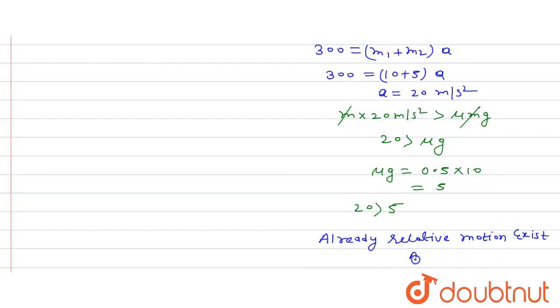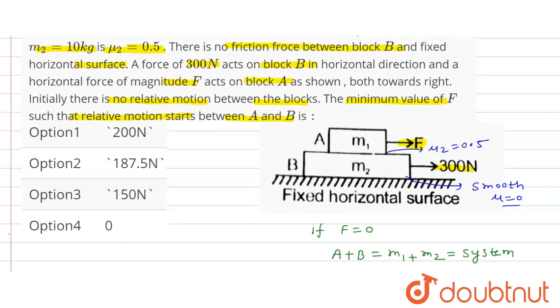Already relative motion exists at F minimum equals 0. So force minimum will be 0. Option 4th is the correct option.